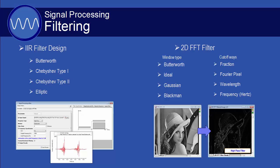In addition to the smoothing and filtering tools in Origin, Origin Pro provides an IIR filter design tool. A 2D FFT filter tool is also available, with a wide selection of window and cutoff options.